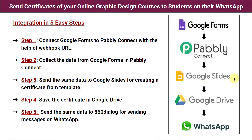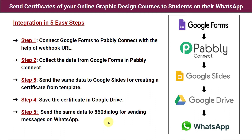Step three: send the same data to Google Slides for creating a certificate from a template. Step four: save the certificate in Google Drive — I have created a folder there where I want all certificates saved. Step five: send the same data to 360 Dialog for sending messages on WhatsApp. We integrate 360 Dialog instead of WhatsApp directly because WhatsApp doesn't allow you to send messages directly — 360 Dialog is the official API of WhatsApp.